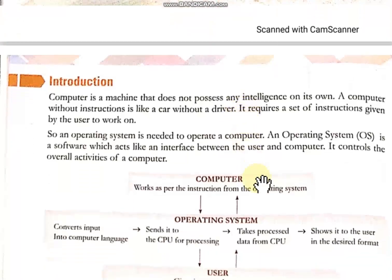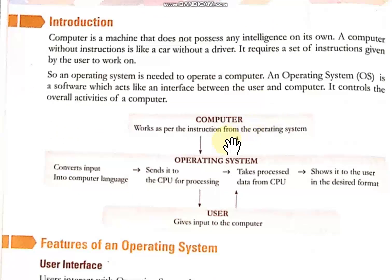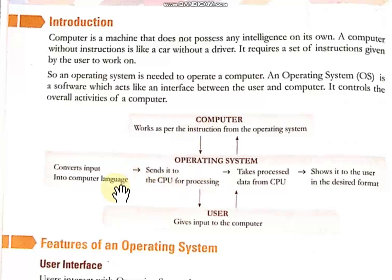To explain more, I will take the help of this diagram. You see there are three things: computer, operating system, and user. The operating system lies between the computer and the user. Whenever an instruction is given to the computer, it gets converted into a language that the computer understands — that is the computer language. Then it is sent to the CPU for processing. The CPU processes the data and gives it back.